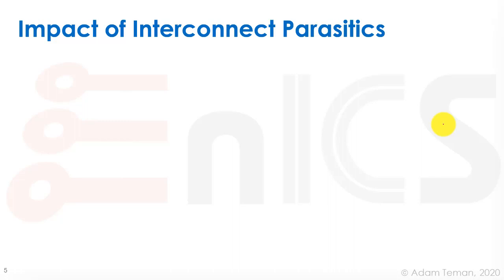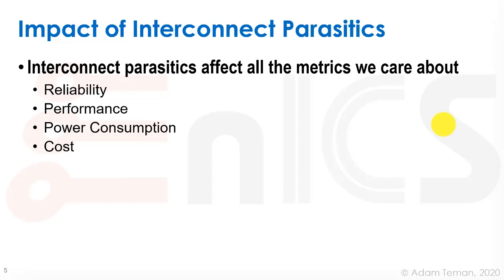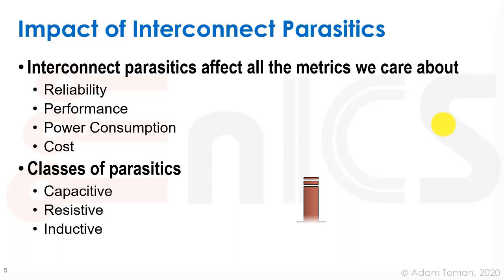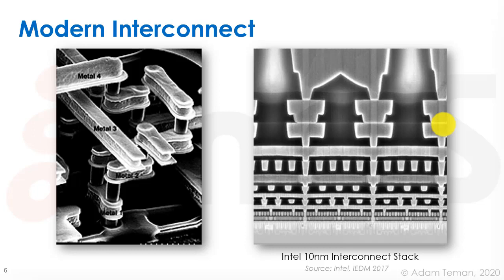These parasitics — the parasitic parts of the interconnect — have a lot of implications on all the metrics we care about: reliability, performance, power consumption, and cost. When we look at the classes of parasitics, we usually start with the capacitive, which is the most important in VLSI, then the resistive, and finally inductive, which we won't be discussing much in this lecture series.